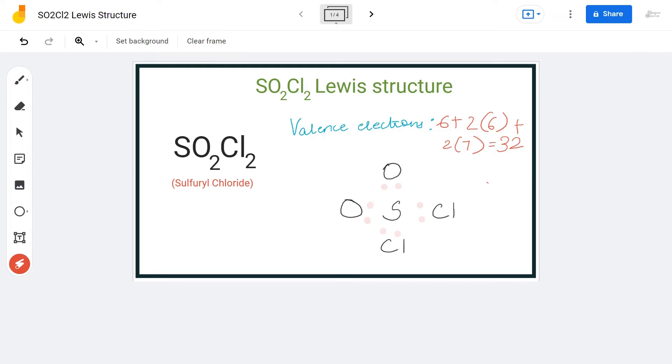So we are going to place six valence electrons around each atom except for the central atom. Six around this oxygen atom, six for this oxygen atom, six for this chlorine atom, and six for this chlorine atom. Doing that, we will be using up all our 32 valence electrons and we will have complete octets for all oxygen and chlorine atoms.